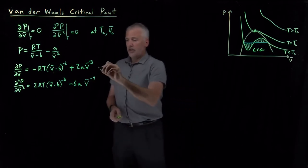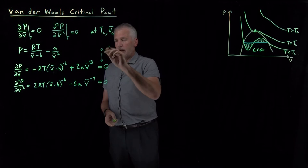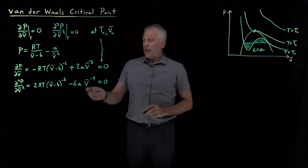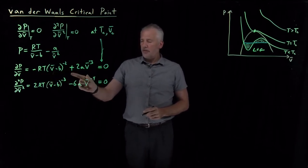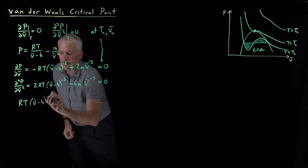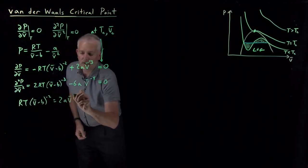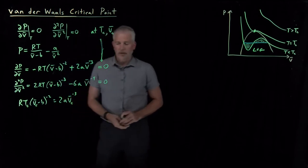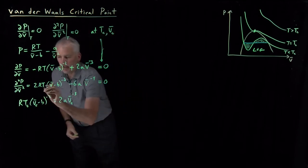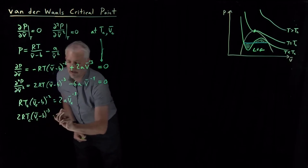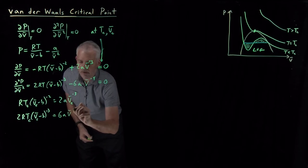What's special about the critical point is both the first and second derivatives equal zero when we're at the critical temperature and critical molar volume. Setting the first derivative equal to zero: RT(v-bar minus b)^{-2} equals 2a·v-bar^{-3} — that's true only at the critical volume and critical temperature. Doing the same for the second expression: 2RT(v-bar minus b)^{-3} equals 6a·v-bar^{-4} at critical conditions.